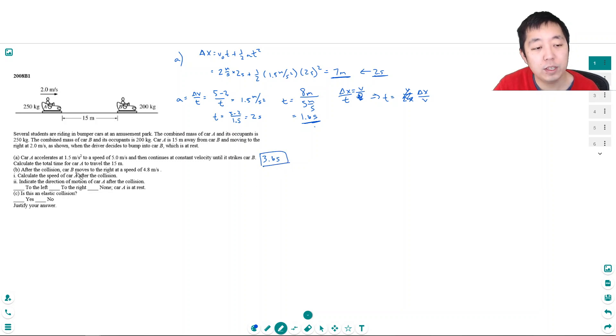Part B: After the collision, car B moves to the right at a speed of 4.8 meters per second. Calculate the speed of car A after the collision. Now in this collision, in all collisions, as long as there's no outside force, momentum has to be conserved. That's the conservation of momentum.